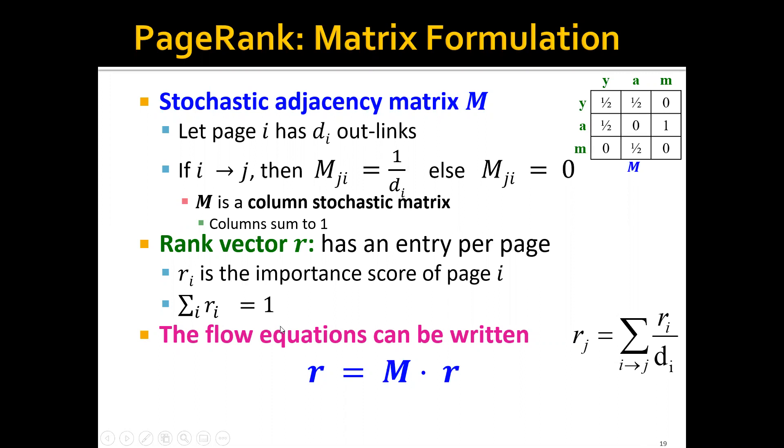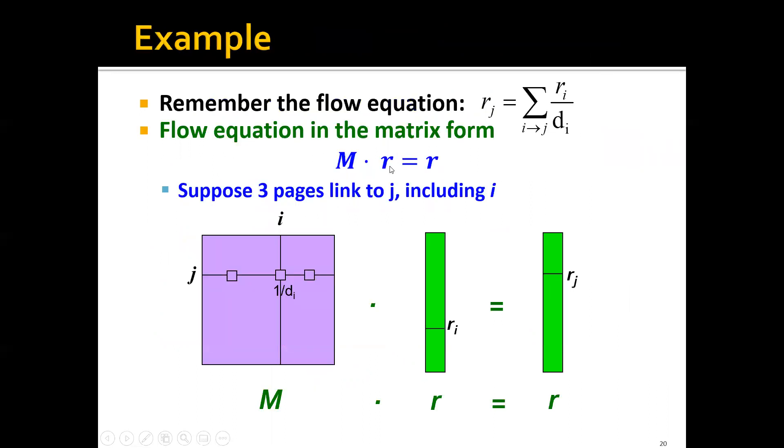We can write down the flow equations using the matrix formulation. These two are actually equivalent given how we construct this M. To convince you that the matrix formulation is correct, let's take a look at this example. Suppose we already transformed the graph and flow equations into the stochastic adjacency matrix M, and we have three pages linked to j, including page i.